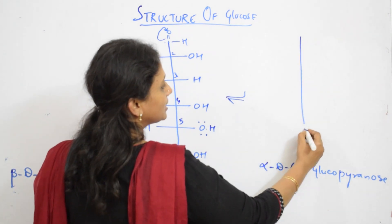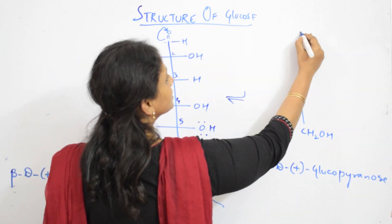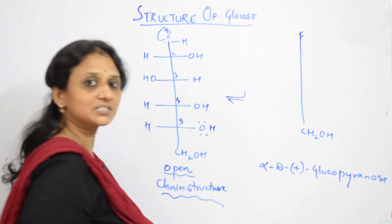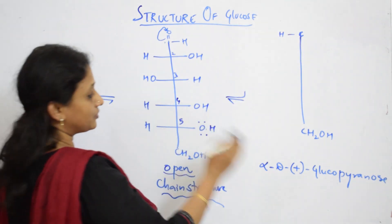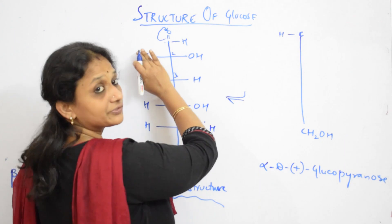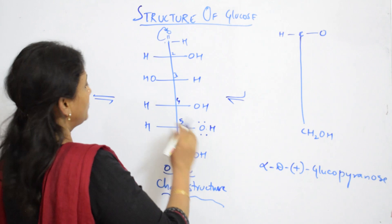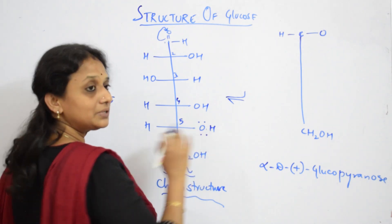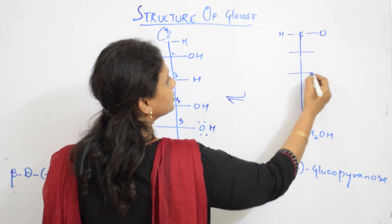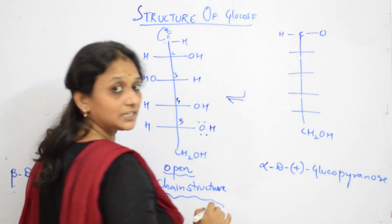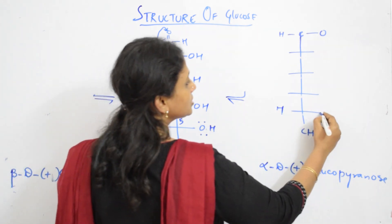Let us draw the skeleton. This is your first carbon. For alpha, the H is on the left-hand side, and the double bond oxygen has already shifted. Now, from the fifth carbon, the hydrogen is going to shift. Let me number: one, two, three, four, five. From the fifth carbon, the oxygen is going to form a cyclic structure with the first carbon.